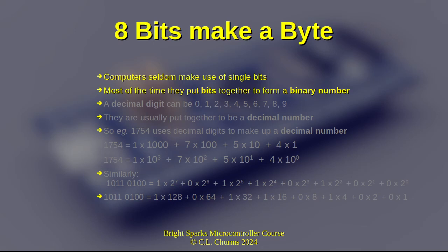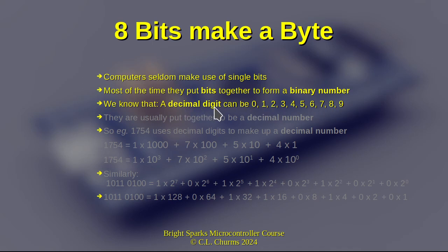A binary number is something like 010010, or whatever we want to represent. That's actually just an old concept rechristened into a binary number. You remember that a decimal digit is any one of 0, 1, 2, 3, 4, 5, 6, 7, 8, 9. We very seldom just use single numbers — we often string them together into something we refer to as a decimal number, which we do all day long every day when we work with numbers.